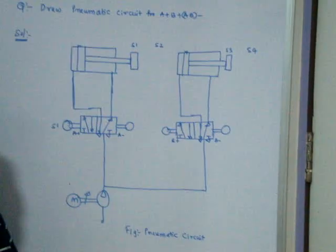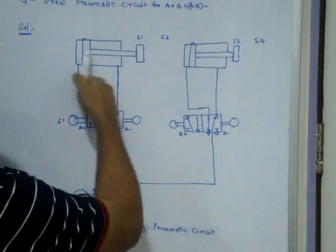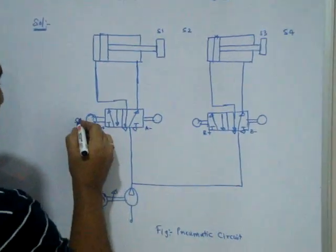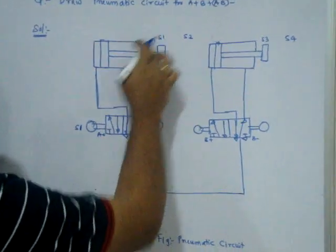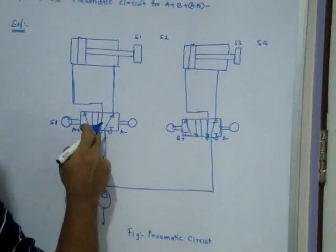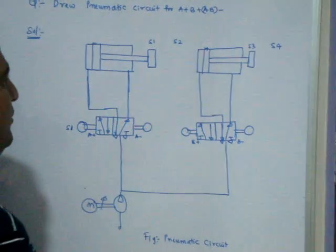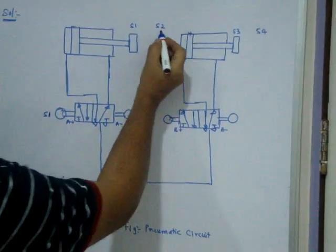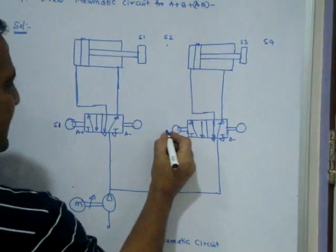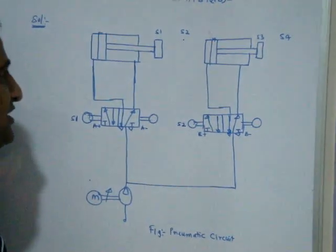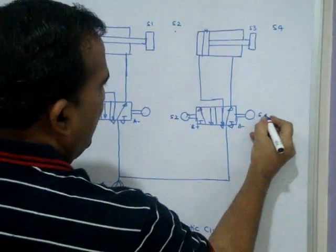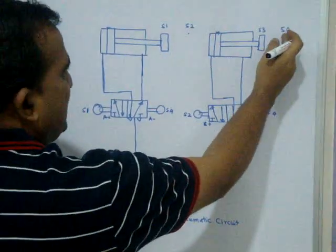B+ means extending for the cylinder. A- means retracting. B- means retracting. If I give a pneumatic connection from S1 to here, then this position is on, the compressed air goes to this side, and the piston moves to S2. When it moves to S2, B+ should come on. I write S2 here. When S2 is on, it goes to S4. When S4 is reached, both should retract.